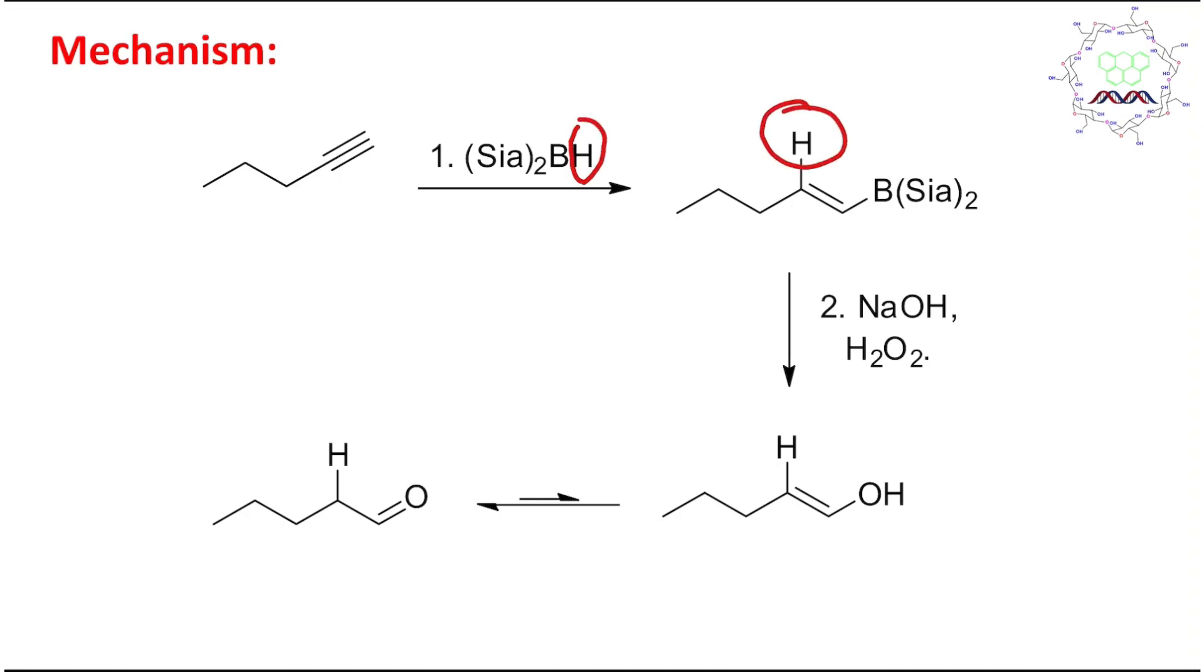This boron and hydrogen will be transferred from the same side. Not only that, this boron is attached to two (Sia)2 groups, big groups, so it prefers to remain in the less bulky side. This side has one hydrogen. These alkyl groups and boron are far apart from each other, so the steric repulsion interaction between these two is minimum in this way.